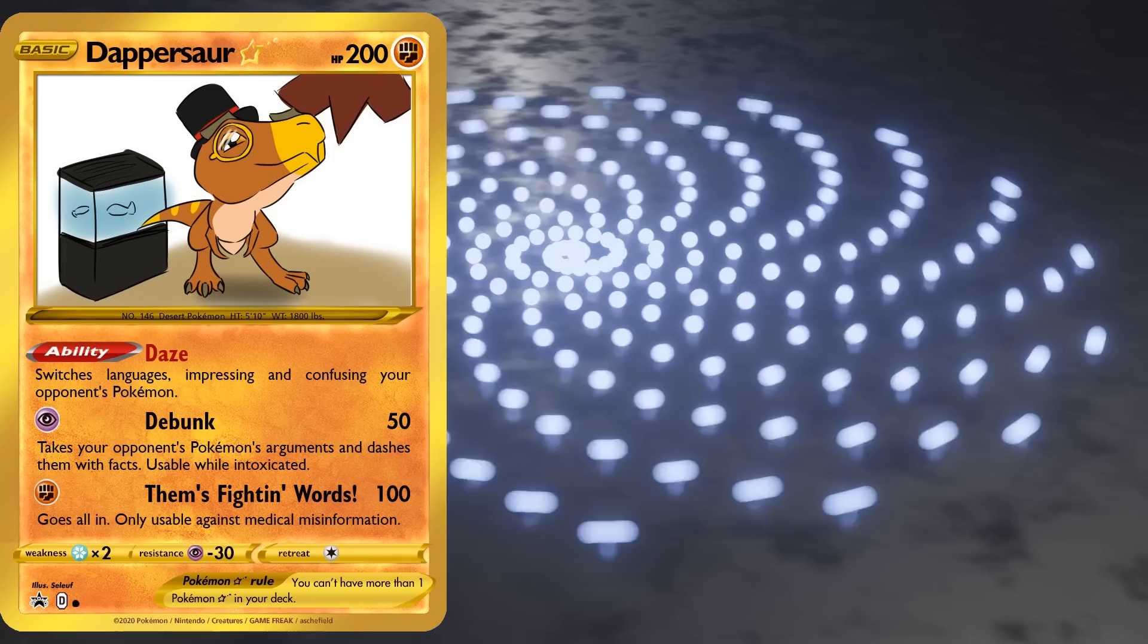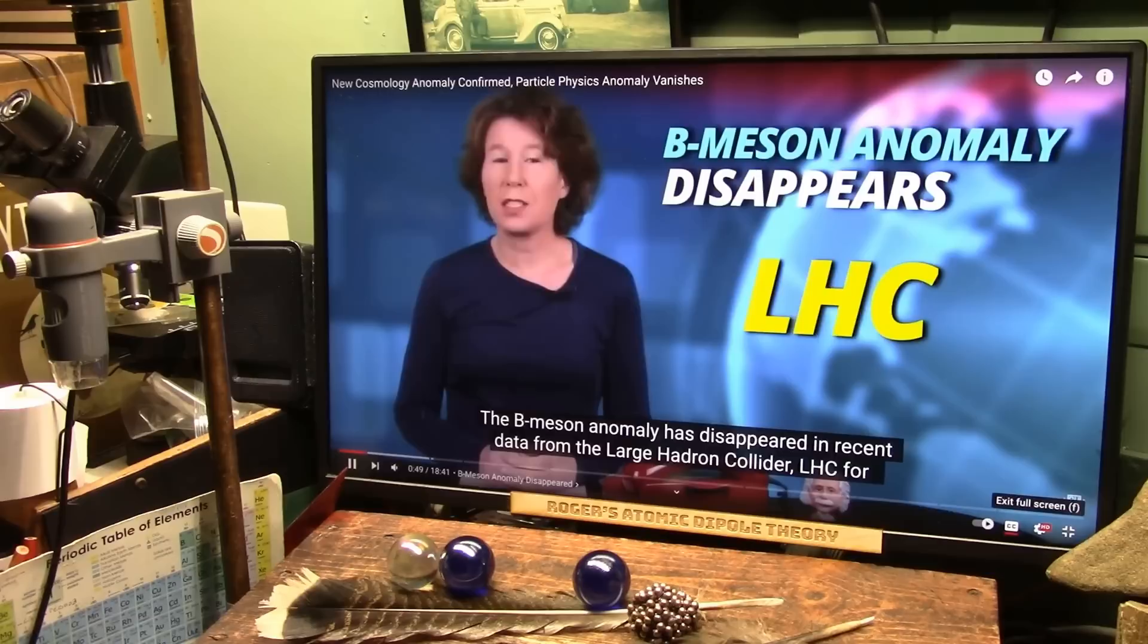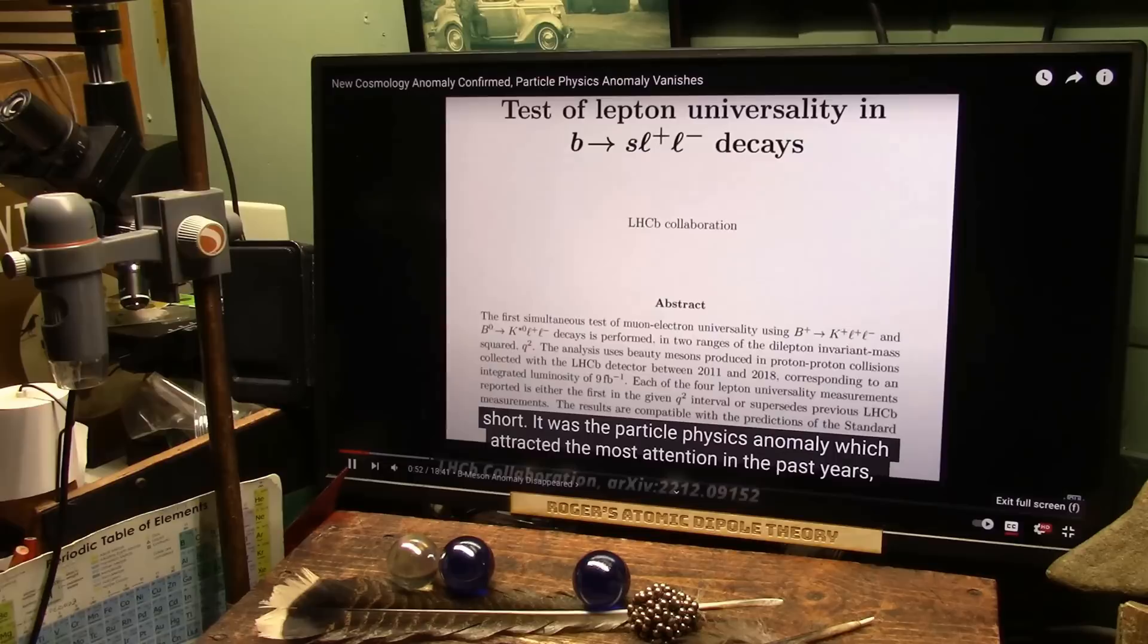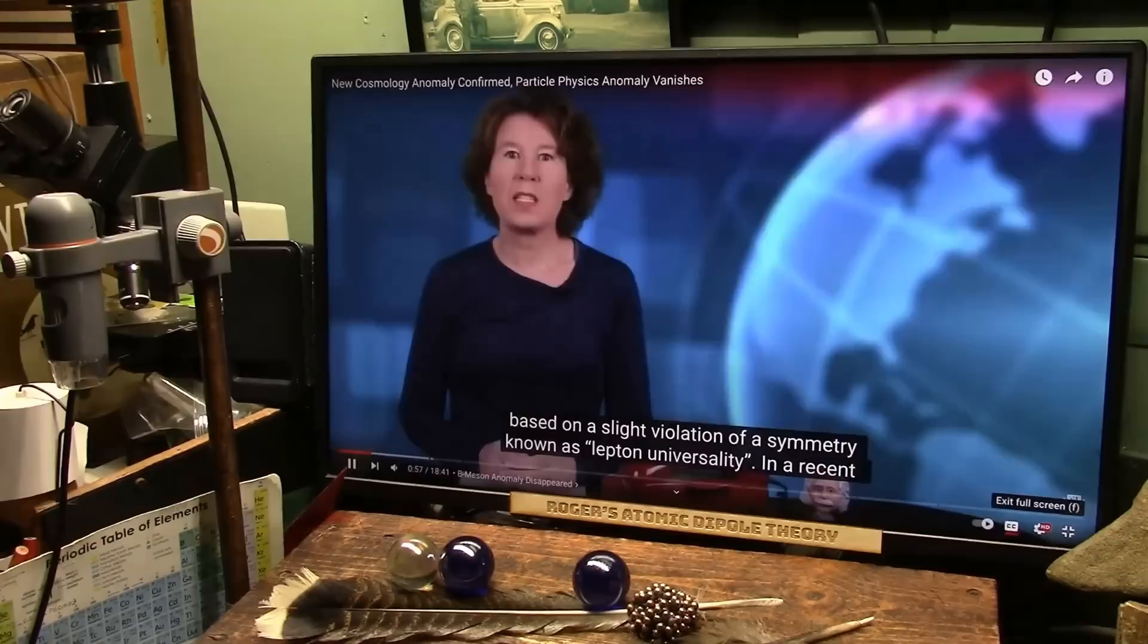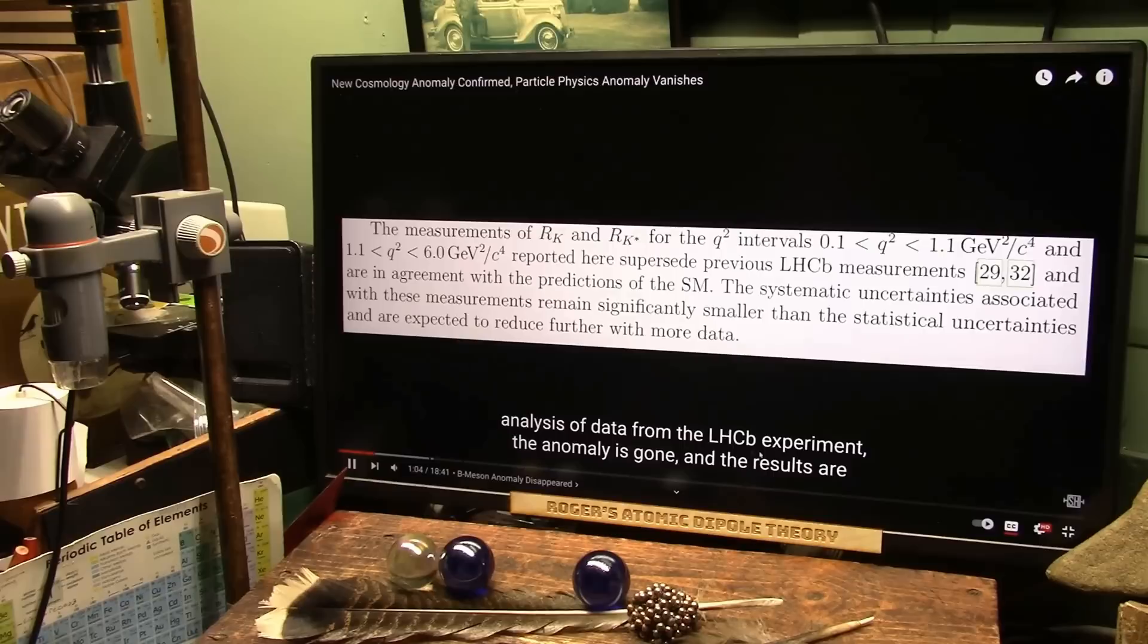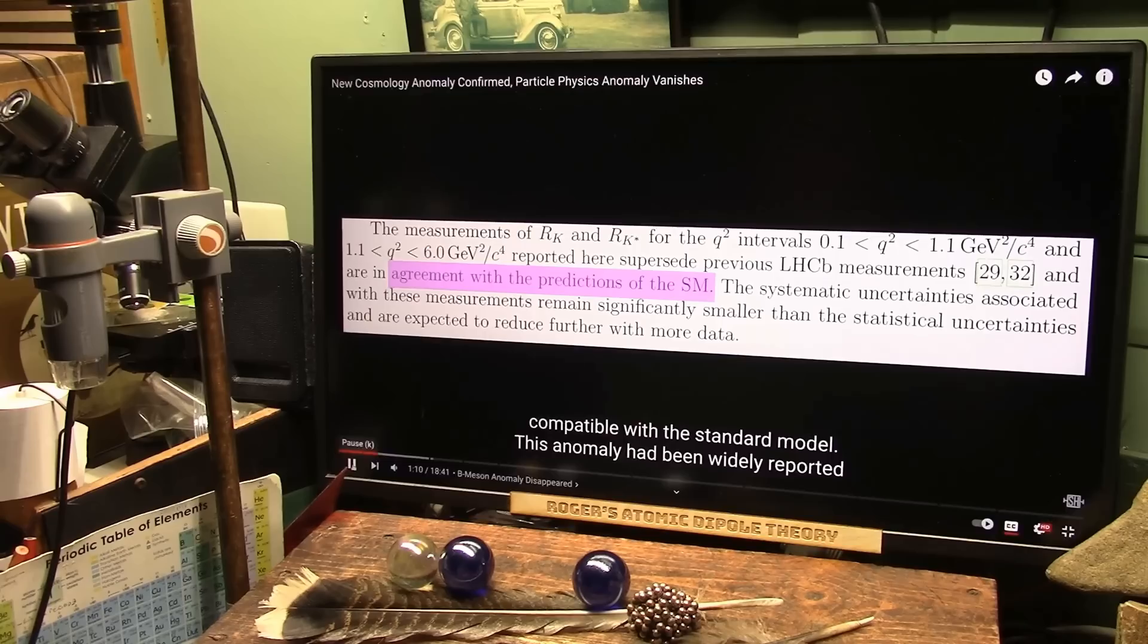So watch this. This is Sabine Hossenfelder. This is her channel. My apologies to Roger. He did actually say her name. The B meson anomaly has disappeared in recent data from the Large Hadron Collider, LHC for short. It was the particle physics anomaly which attracted the most attention in the past years, based on a slight violation of a symmetry known as lepton universality. In a recent analysis of data from the LHC B experiment, the anomaly is gone, and the results are compatible with the standard model.